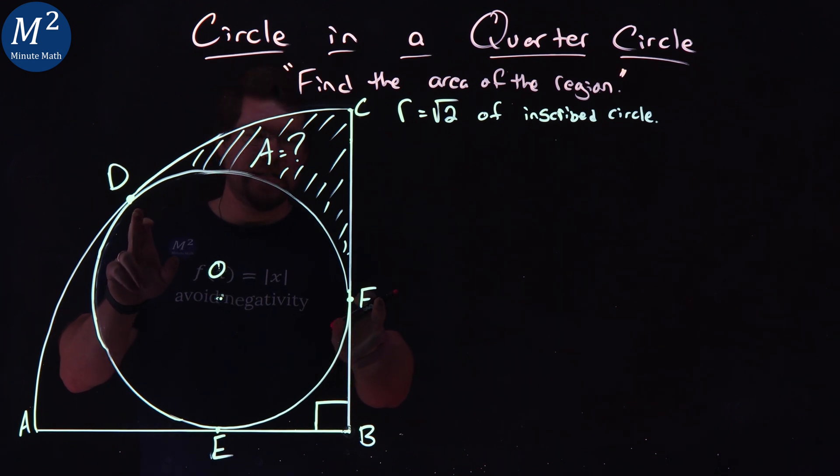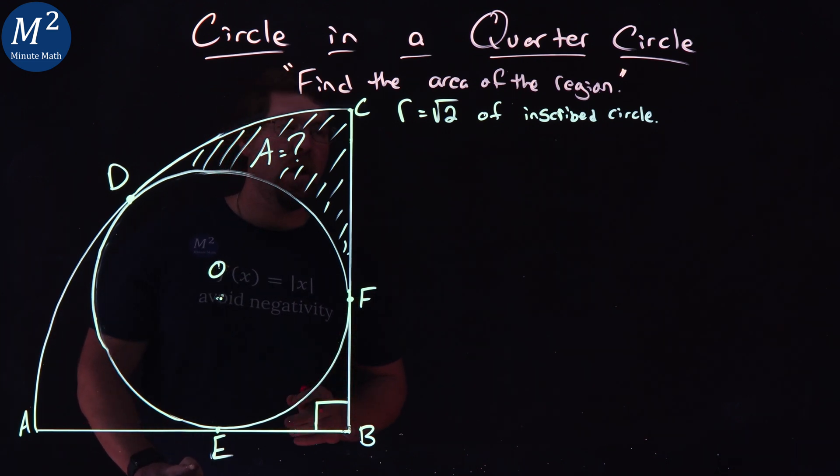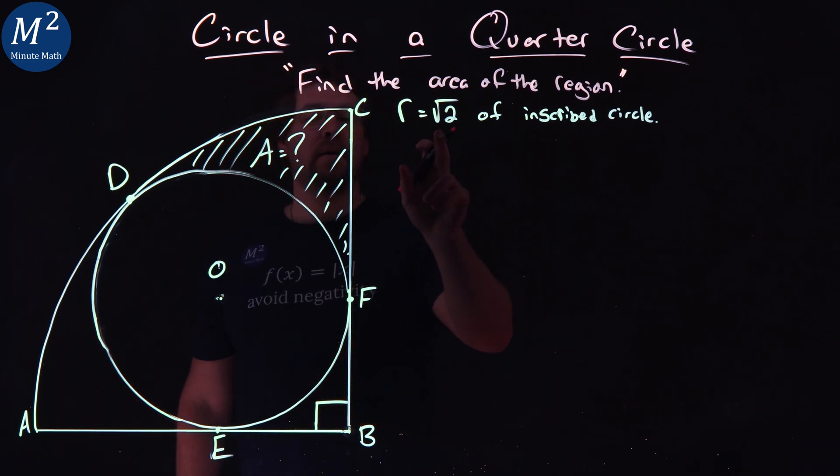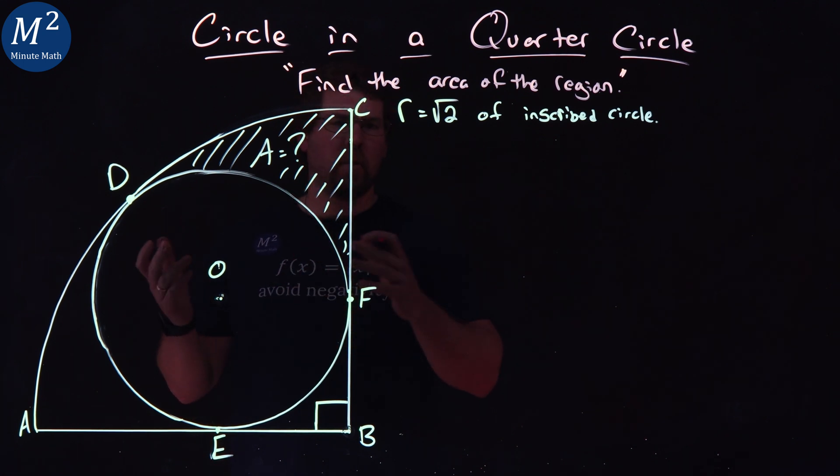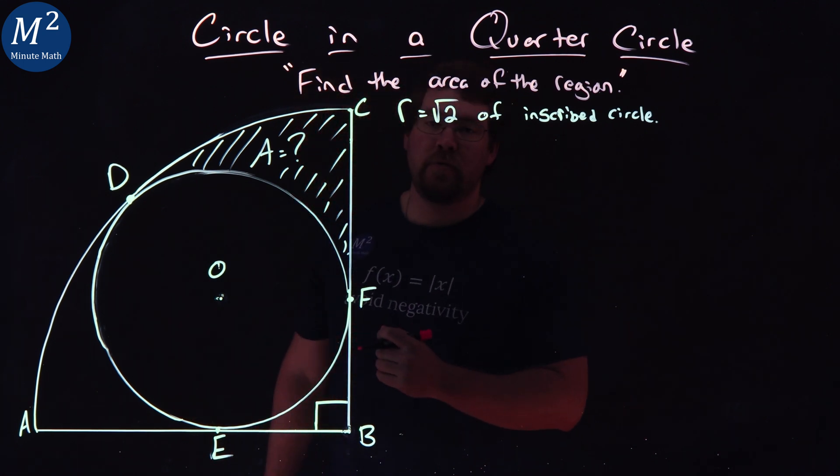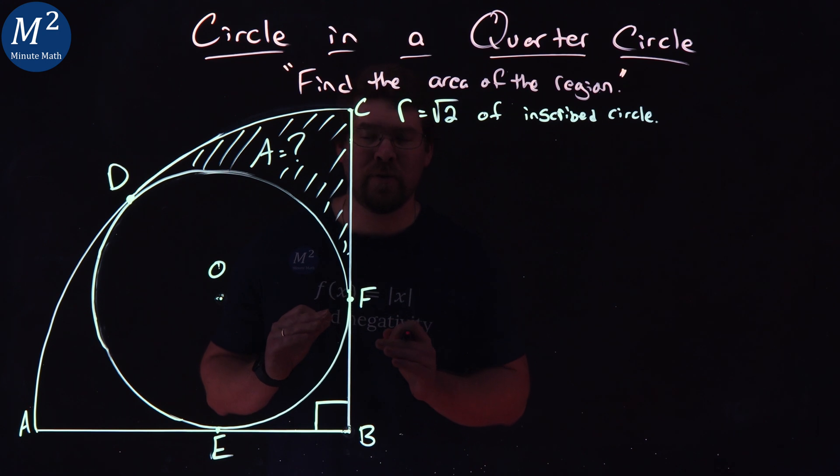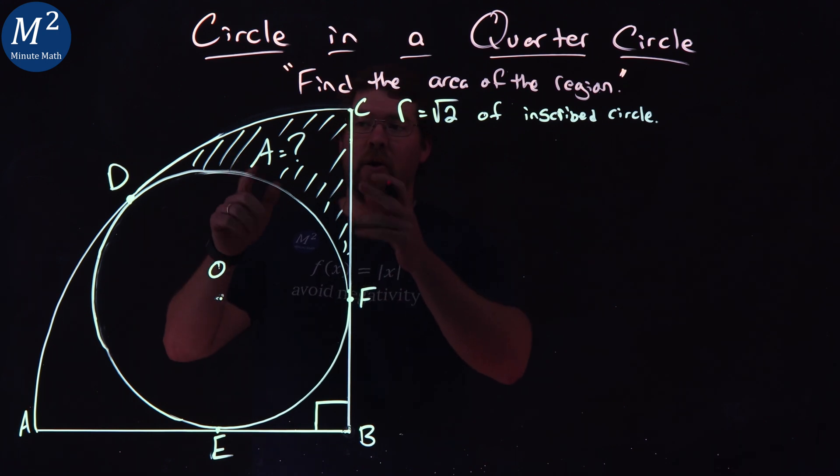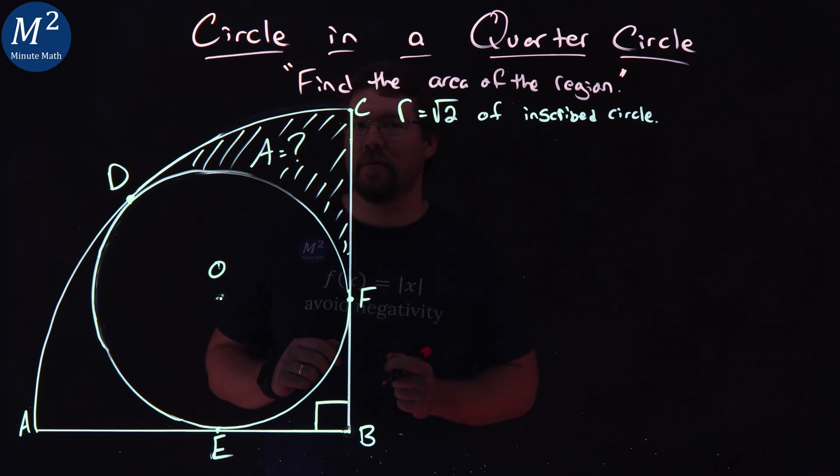And it has some tangent points, D, F, and E right here. One thing we're given is the radius of our inscribed circle, or little circle, is square root of 2. With just that information, can we find the area of our shaded region?